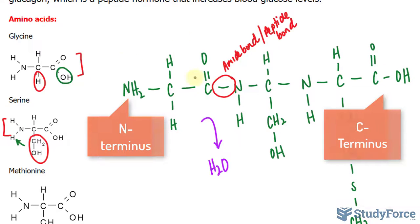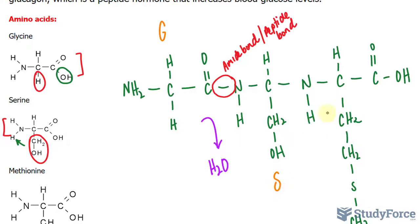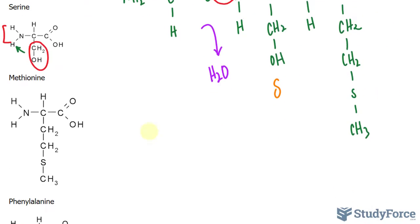The abbreviated name for glycine is G, for serine it's S, and for methionine it's M. So here's how you name this. You can name it in its short form as GSM, but this tripeptide is named from the N-terminus to the C-terminus, where instead of glycine we write down Glycyl, G-L-Y-C-Y-L.